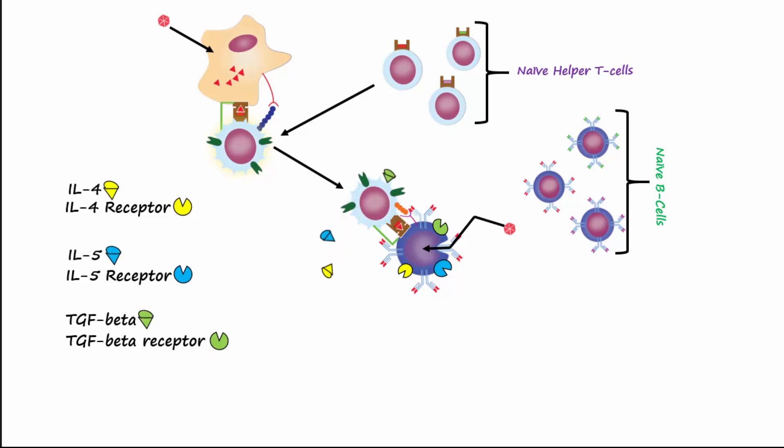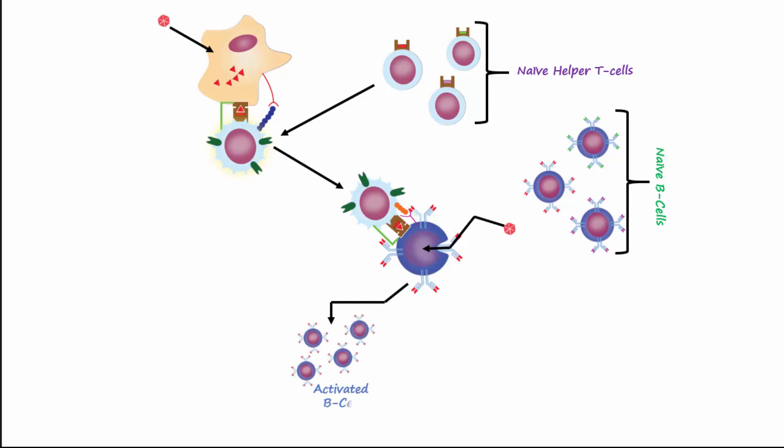These cytokine receptors bind to IL-4, IL-5, and TGF beta produced by the T helper cell. These cytokines, along with the CD40/CD40L interaction, are important for B cell activation. The activated B cell divides to form a clone army made up of identical activated B cells.